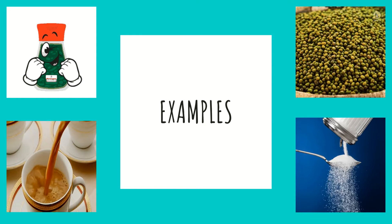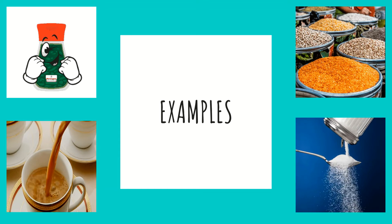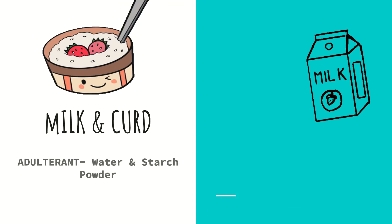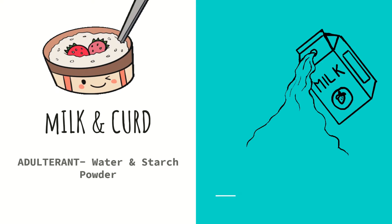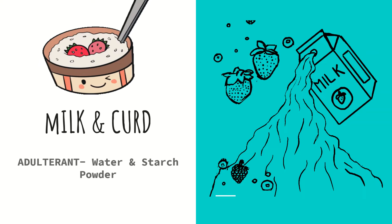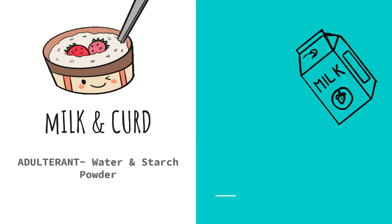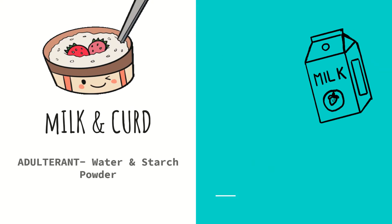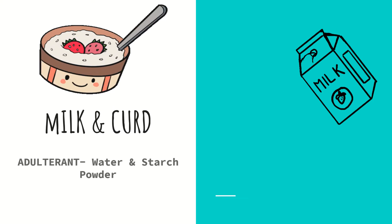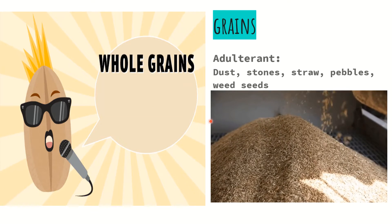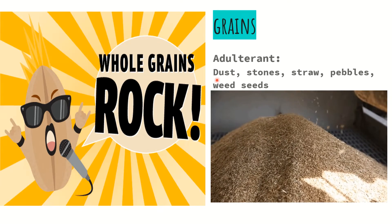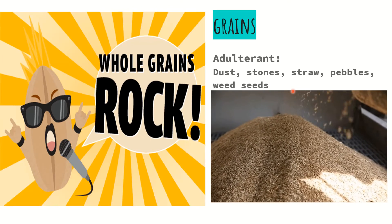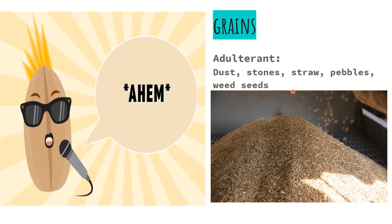Now we are going to discuss some common examples related to food adulteration, starting with milk and curd. The adulterant used in milk and curd is water and starch powder, and it has very harmful effects like stomach disorders. Next is grains — the adulterants used in grains are dust, stones, straw, pebbles, and wheat seeds.